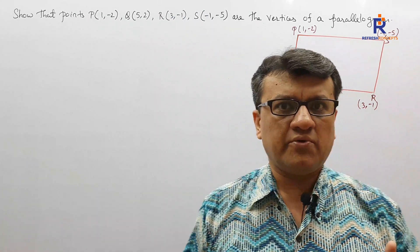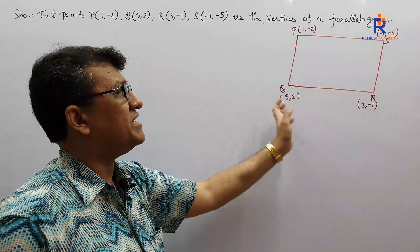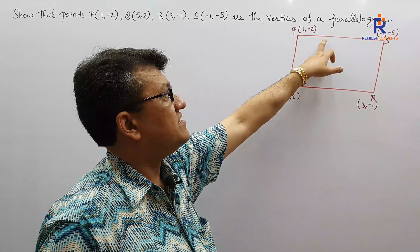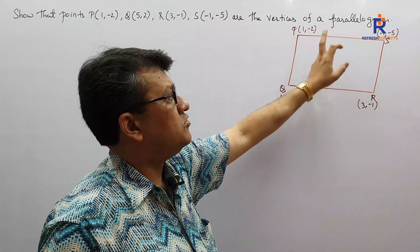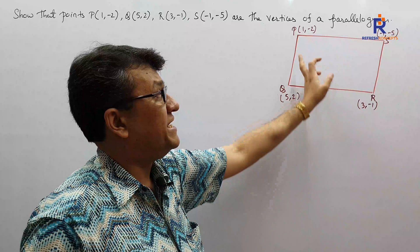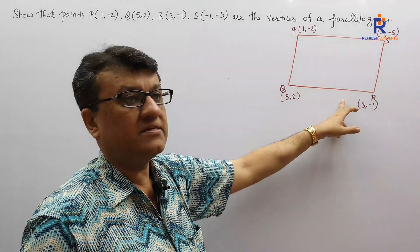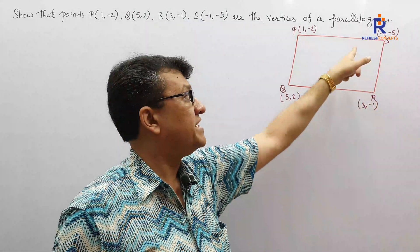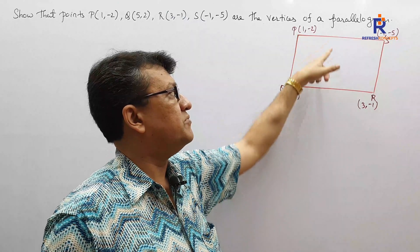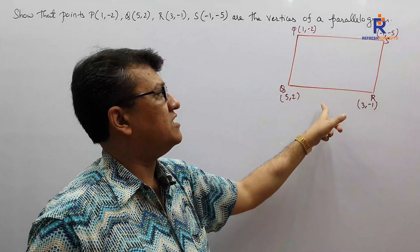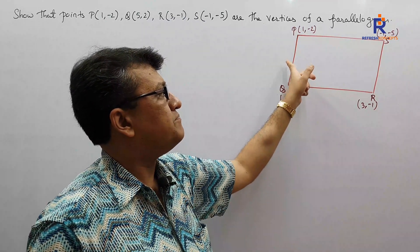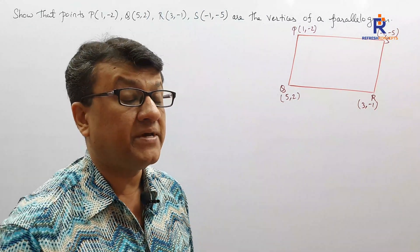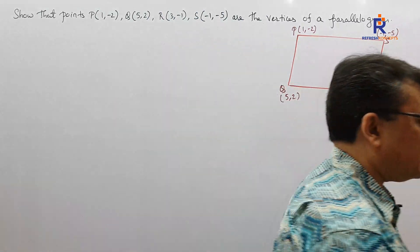So if I want to prove PQRS as a parallelogram, what I need to prove is: PS should be parallel to QR, and PQ should be parallel to SR. The moment I prove PS parallel to QR and PQ parallel to SR, I can say both pairs of opposite sides are parallel, and the quadrilateral is a parallelogram.